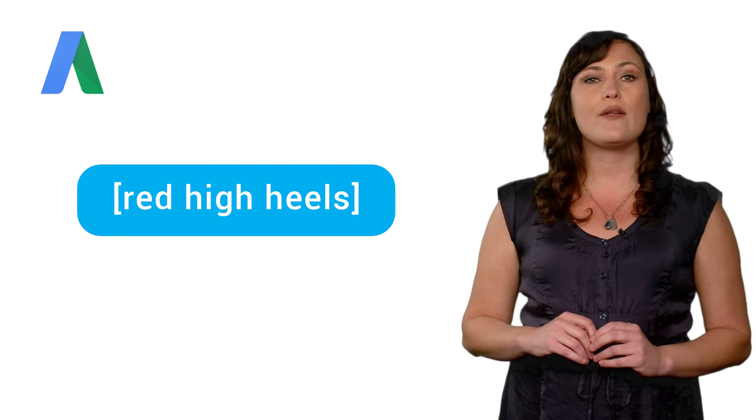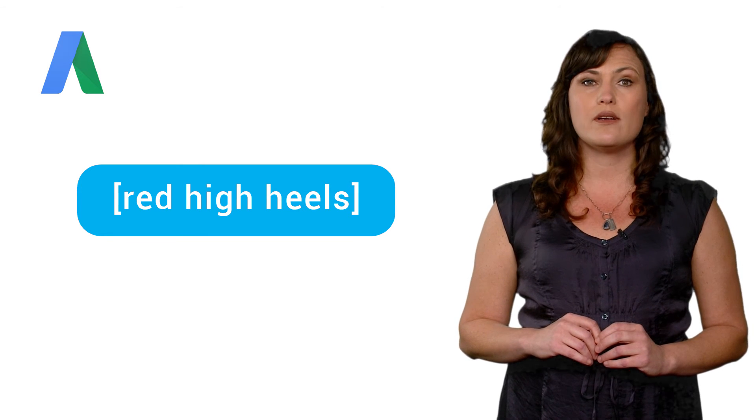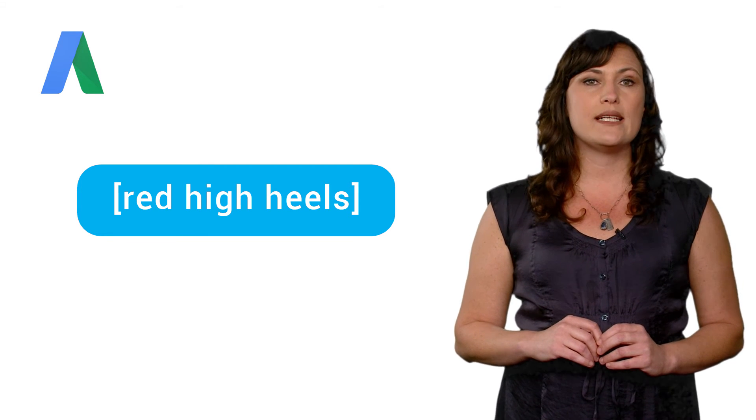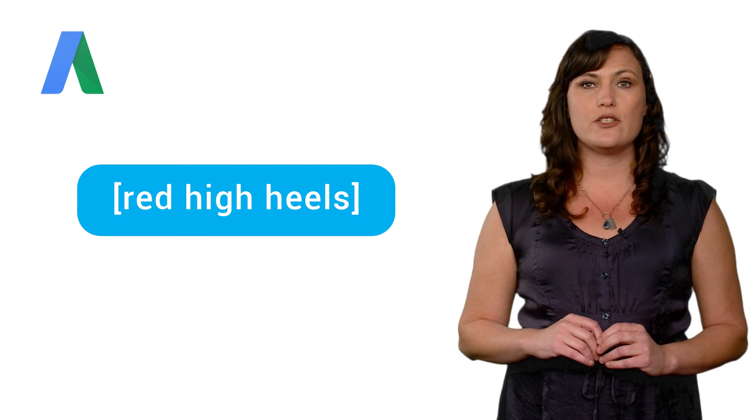It's simple to use the exact match option. Just surround the entire keyword with brackets. You can do this when you add a new keyword, or you can edit existing keywords in your account.